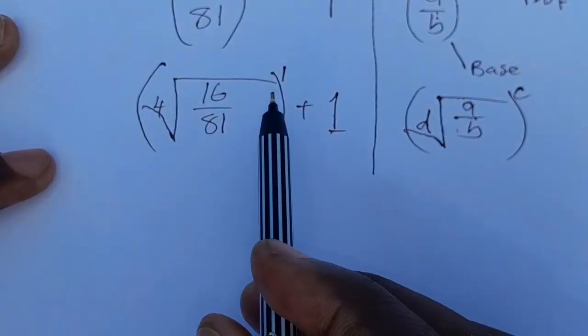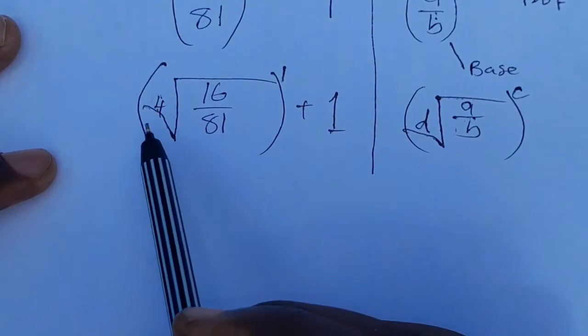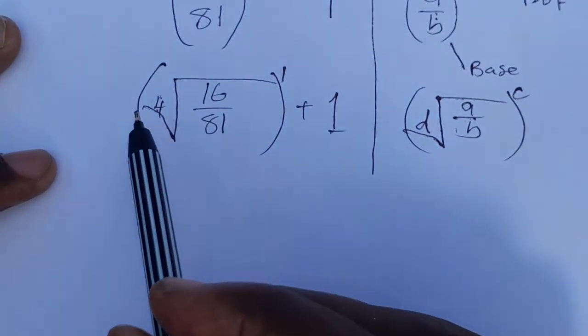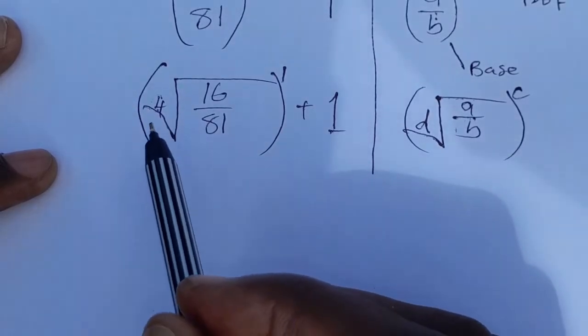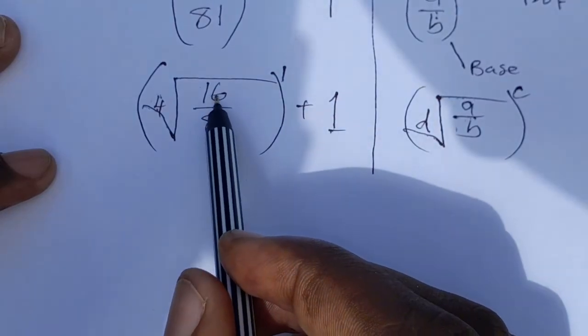Now what does it mean when they want you to find the fourth root? A fourth root of a number is a factor of a number such that if that number multiplies itself, it multiplies by itself four times, you get back your number.